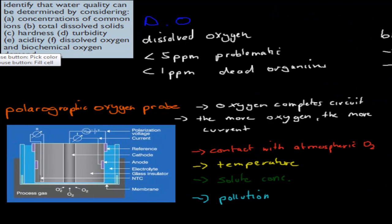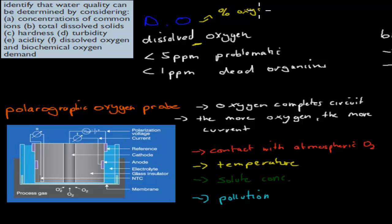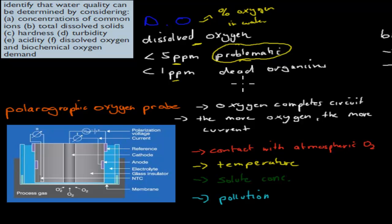Next is dissolved oxygen, which is exactly as the name suggests — the amount of oxygen dissolved in water, measured in parts per million. If we have less than 5 parts per million, we have a problem. We need more than 5 parts per million for the water to be healthy. If it drops below 1 part per million, most aquatic marine life will die, because fish and other organisms require oxygen just like we do. A range of 5 to 8 parts per million is quite good.